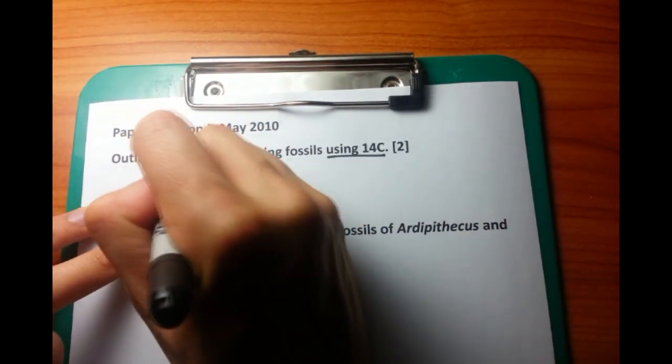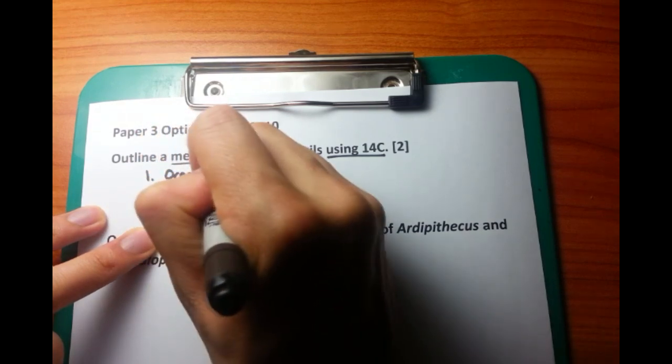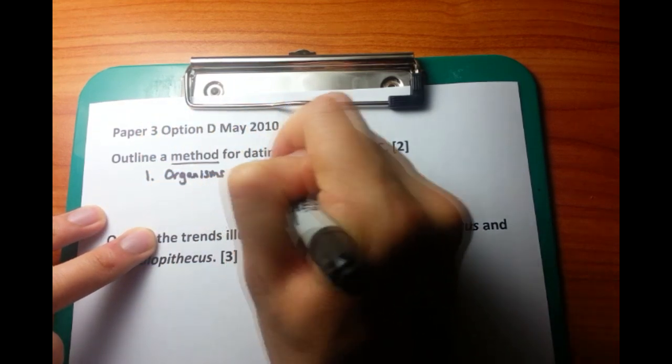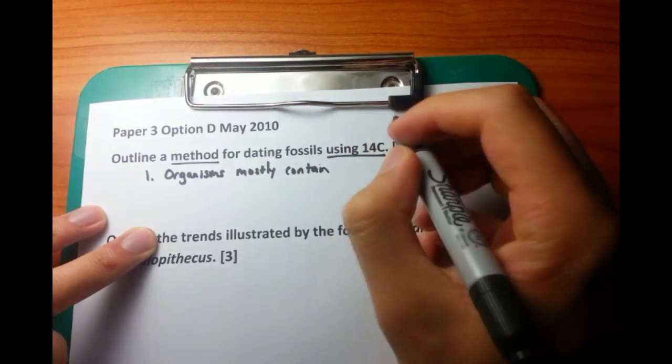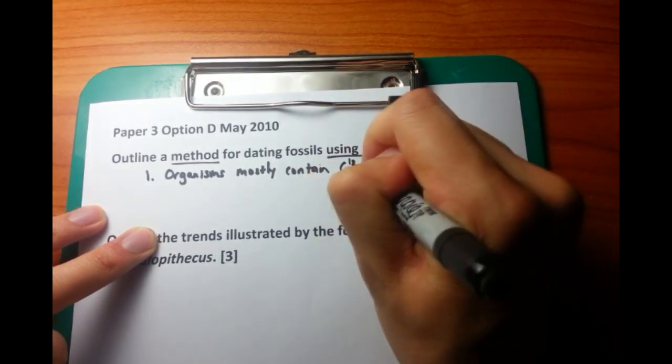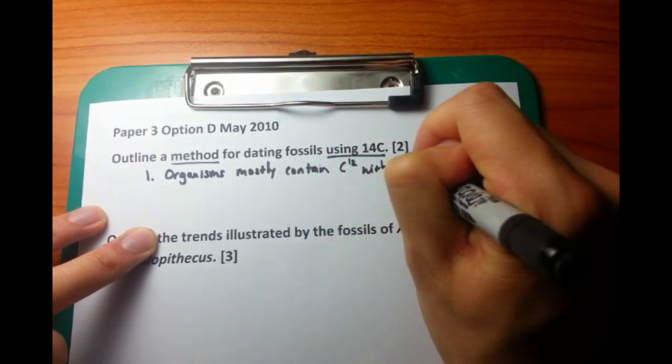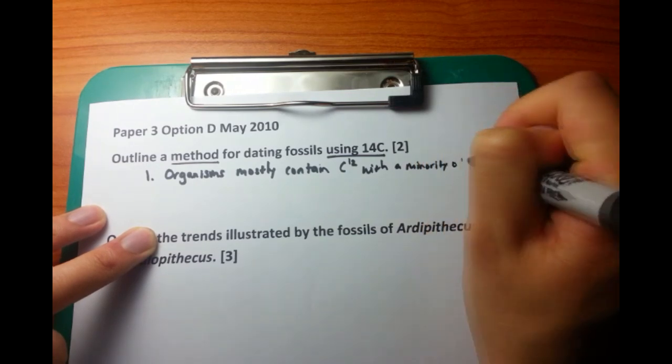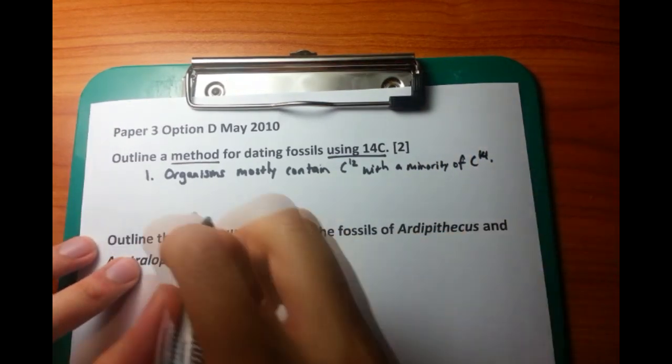The principle of carbon dating is that, firstly, organisms mostly contain carbon-12, with a minority of carbon-14. Let's say 99% of the carbon molecules in a living organism is carbon-12, and 1% is carbon-14.